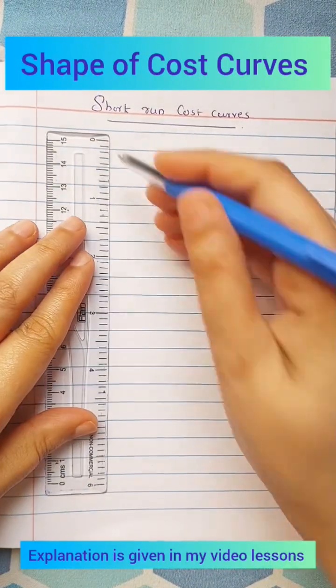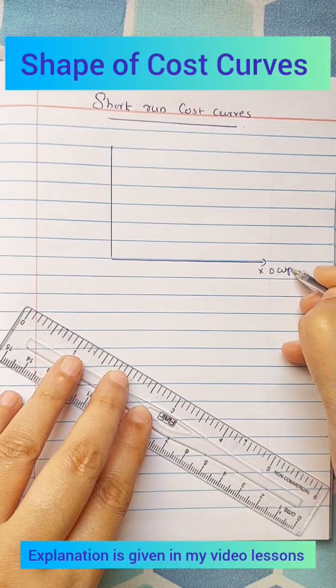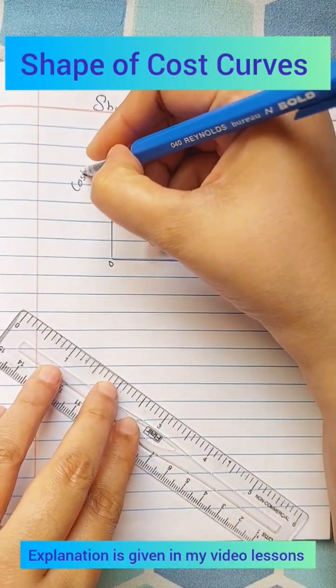Shape of short run cost curves and long run cost curves. We place output on x-axis and cost on y-axis.